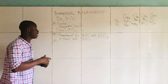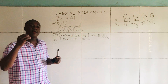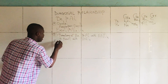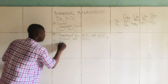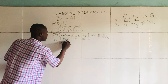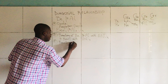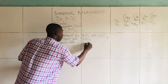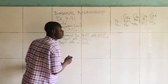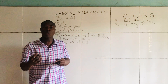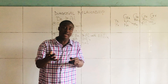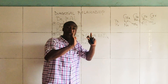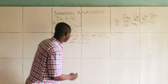The third concept of the diagonal relationship of Beryllium and Aluminium is that they react with alkali. An alkali is a basic soluble hydroxide. They react with alkali to liberate hydrogen gas.